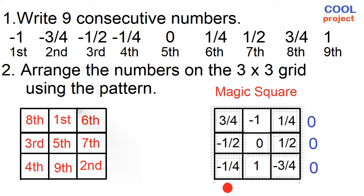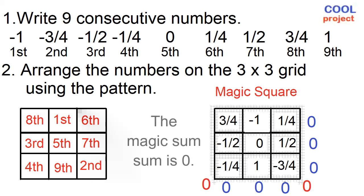3 fourths plus negative 1 half plus negative 1 fourth is 0. Negative 1 fourth plus 0 plus 1 fourth is 0. 3 fourths plus 1 half plus negative 3 fourths is 0. Negative 1 half plus 1 half is 0. 3 fourths plus 0 plus negative 3 fourths is 0. The magic sum is 0.